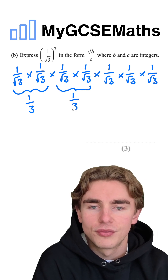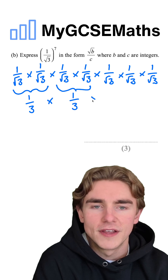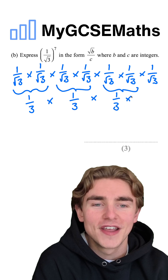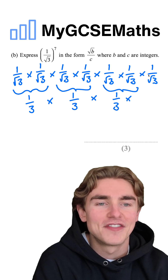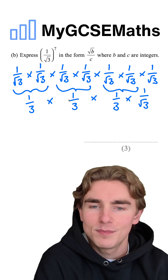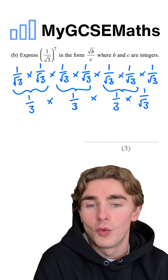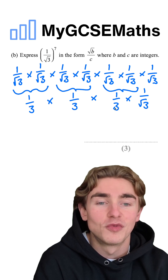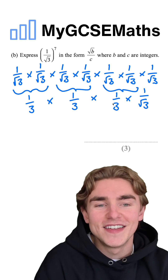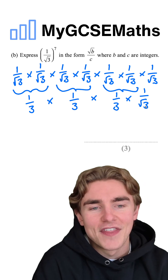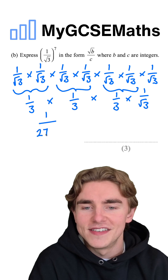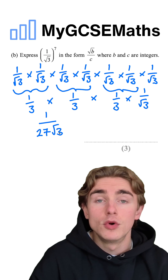So we're going to have 1 over root 3 times by 1 over root 3, pairing these two together we get 1 over root 3, and then we're going to have this times by 1 over the square root of 3 on the end. We can now simplify: 1 over root 3 times 1 over root 3 times 1 over root 3 is going to be 1 over root 27, and then times by 1 over root 3 we're going to have 1 over 27 root 3.